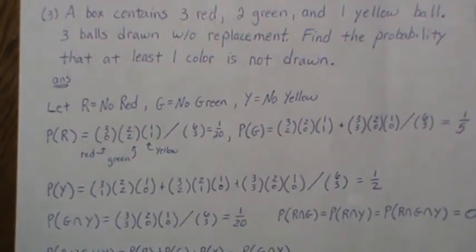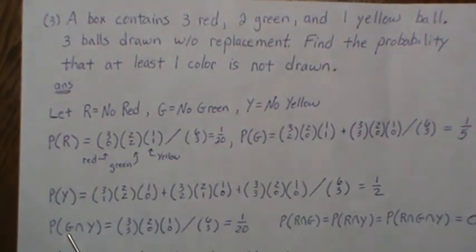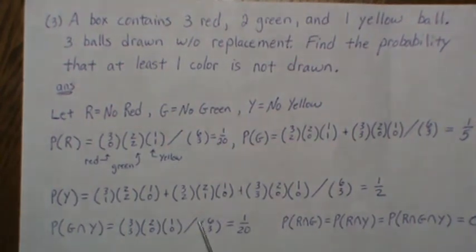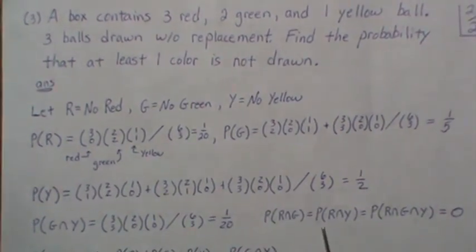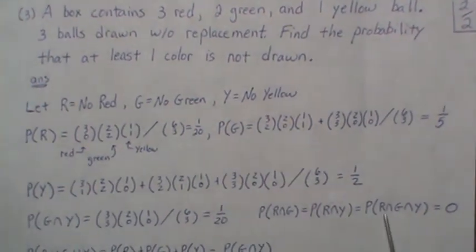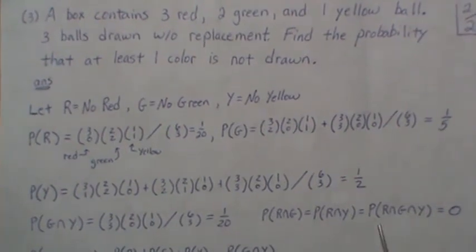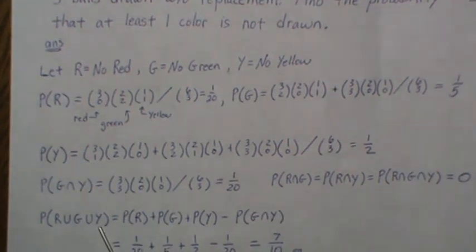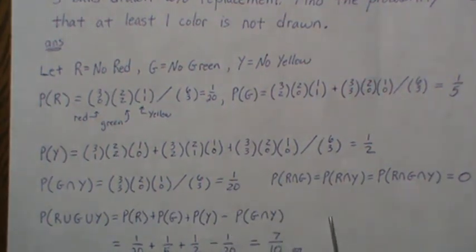The probability of the intersection of no green and no yellow is three red choose three, two green choose zero, one yellow choose zero, over six choose three, which is 1/20. The intersections of no red and no green, and no red and no yellow, are not possible, so those probabilities are zero, as is the three-way intersection.